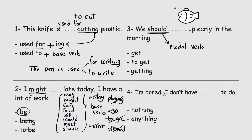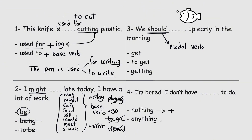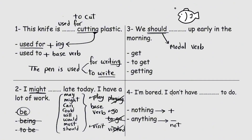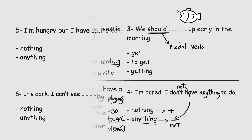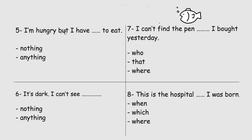I'm bored, I don't have blank to do — nothing or anything? We use 'nothing' in positive sentences, but we use 'anything' in negative sentences with 'not'. Here we have 'don't', which means 'do not', so the sentence is negative. We use 'anything': I'm bored, I don't have anything to do. Next: I'm hungry but I have blank to eat — nothing or anything?